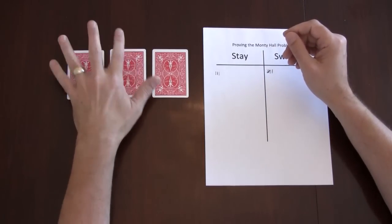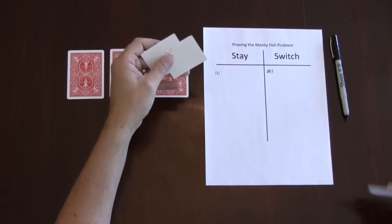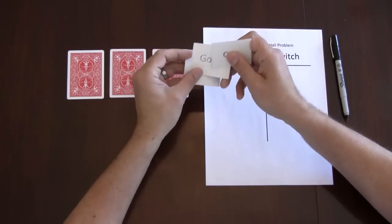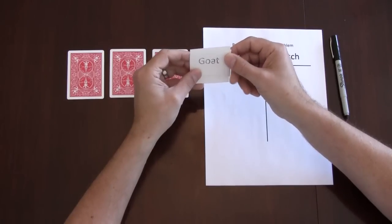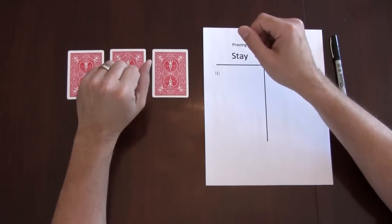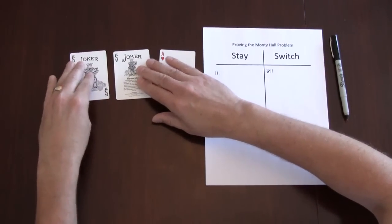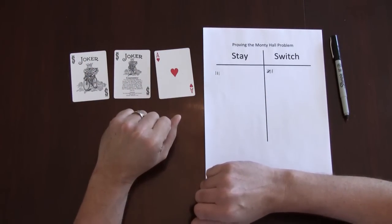In this case we're going to use some playing cards to represent the three doors. You can use slips of paper, which I've done before, where you've written goat and car on them. The slips of paper just get to be a little bit difficult to handle. The cards are easy to shuffle and handle. In this case the cards are going to represent two goats and the car.